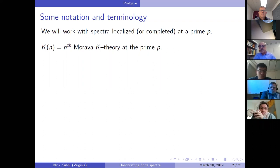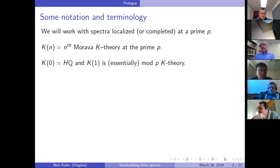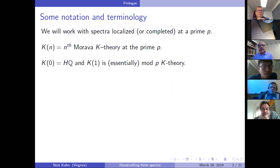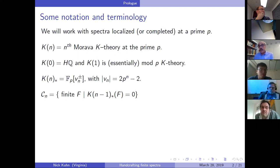Let's work with spectra localized — maybe completed — at the prime p. Let K(n) be the nth Morava K-theory. There's a prime p around behind the scenes. If you aren't familiar with these, they are beautiful theories that Jack Morava pointed to in the 1970s. The first one is rational homology, the next is essentially K-theory, then K(2) and so on. Their coefficients form a graded field with a generator v_n in degree 2(p^n - 1).